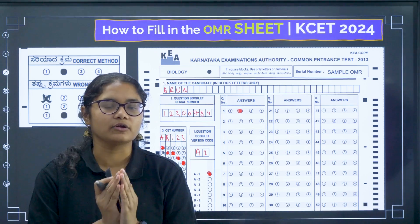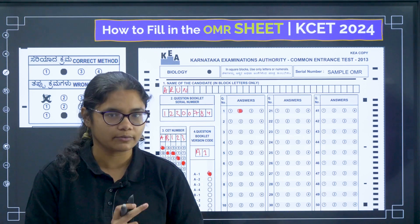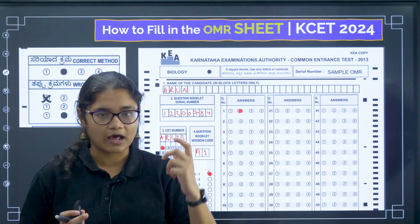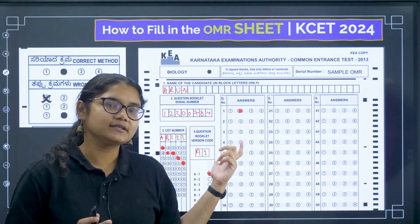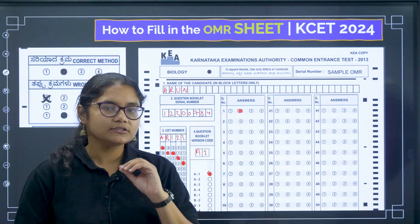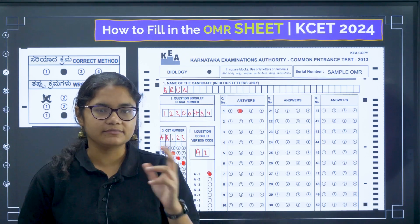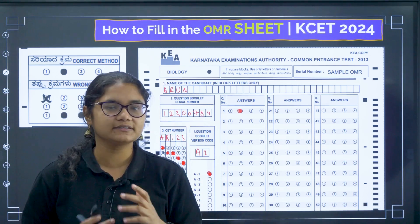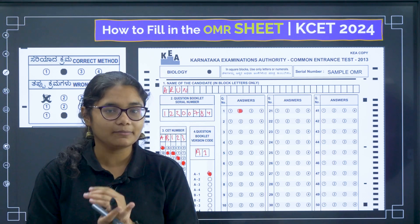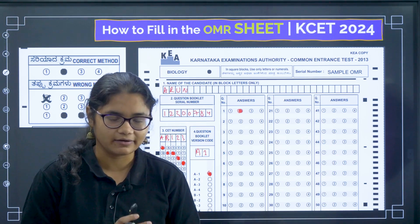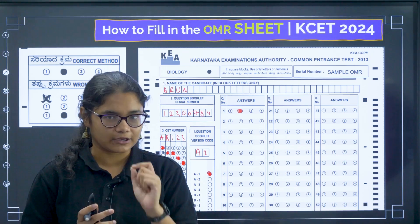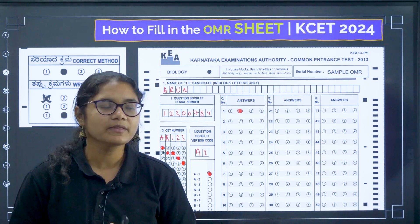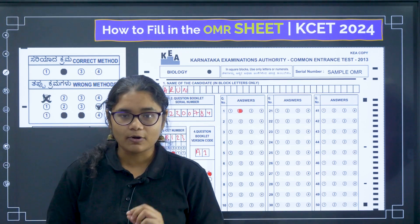Filling answers in batches of 20 keeps you organized and gives you buffer time to review. Since there is no negative marking in the exam, attempt all questions — even if you are unsure, use elimination methods and fill an answer. There is always a possibility the answer is correct. Focus on maximum accuracy and attempt all questions within the time limit.